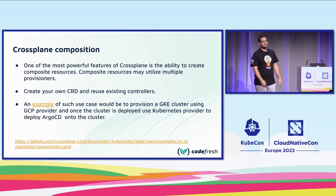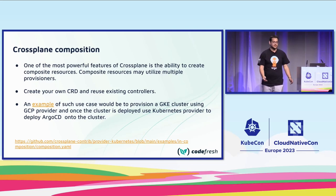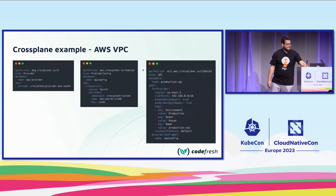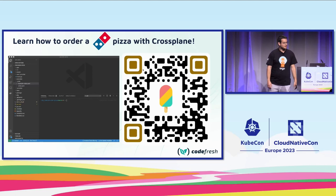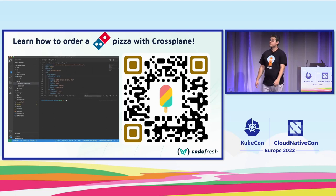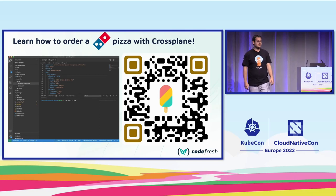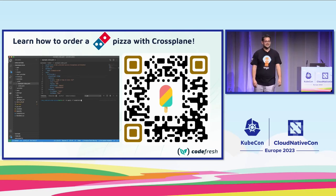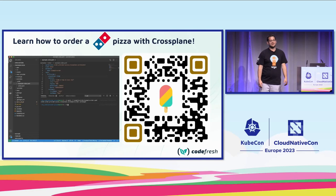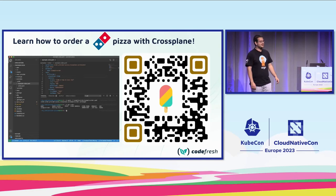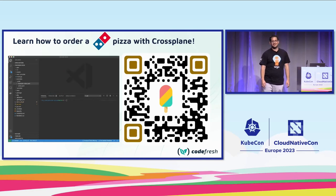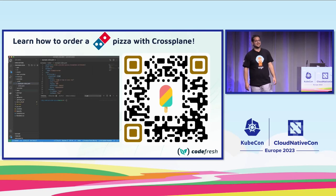The presentation is uploaded to the CNCF website. And if you want to learn how to order a pizza from Domino's with Crossplane, you can scan the QR code. A developer created a Crossplane controller that accesses the Domino's API — and by accident he made a mistake and ordered half a dozen pizzas.